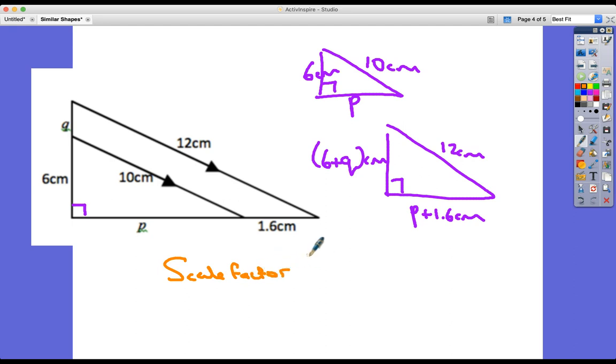There's only one pair of values that are just numbers that don't involve letters. And that's my 12 divided by my 10, which is 1.2. So my scale factor is 1.2. The side lengths in the enlargement are 1.2 times bigger than the side lengths in the smaller object, in the smaller right angle triangle.